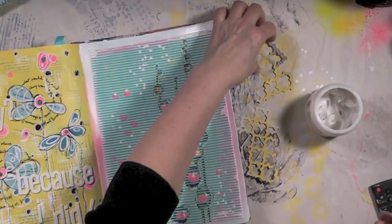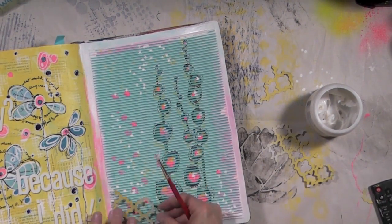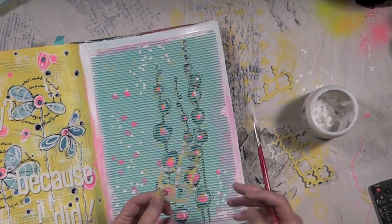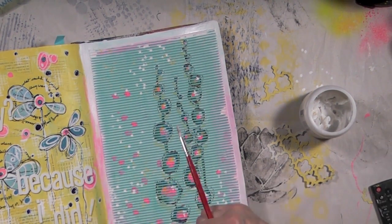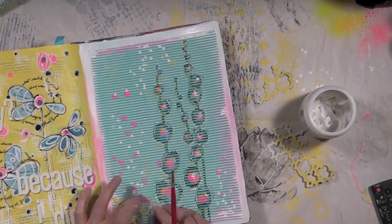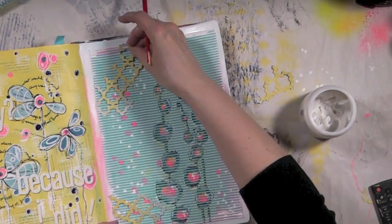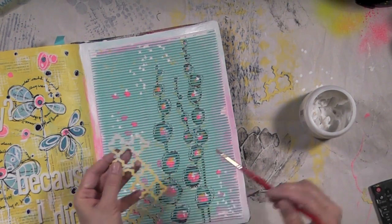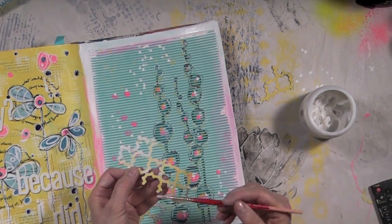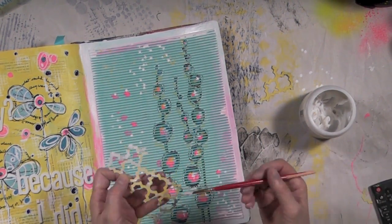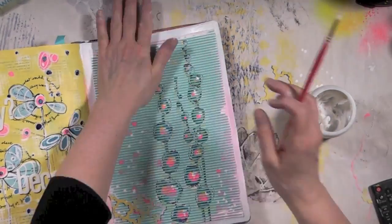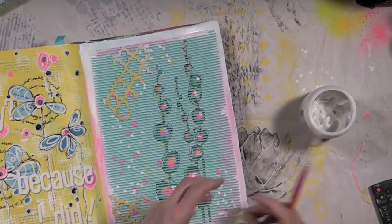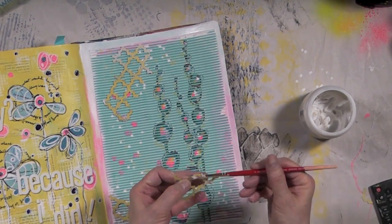Now I'm going to glue those lattice or trellis die cuts to the page, and for this I'm using extra heavy gel. It's a matte extra heavy gel because there's so much texture on that cardstock I didn't want to take the chance of having the trellis lift at some point in time. Yes, the extra heavy gel takes longer to dry but it is totally worth it. Once this is dry it's not going anywhere, it's stuck to the page for good.